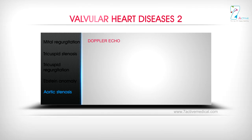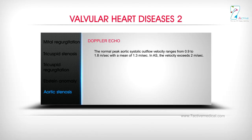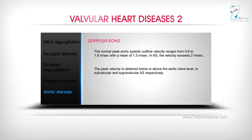Doppler Echo: The normal peak aortic systolic outflow velocity ranges from 0.9 to 1.8 m/s, with a mean of 1.3 m/s. In AS, the velocity exceeds 2 m/s. The peak velocity is obtained below or above the aortic valve level in subvalvular and supravalvular AS respectively.